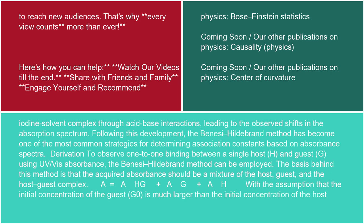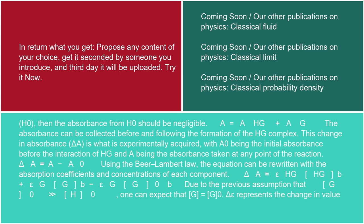To observe one-to-one binding between a single host H and guest G using UV/vis absorbance, the Benesi-Hildebrand method can be employed. The basis behind this method is that the acquired absorbance should be a mixture of the host, guest, and the host-guest complex: A = A_HG + A_G + A_H. With the assumption that the initial concentration of the guest G₀ is much larger than the initial concentration of the host H₀, then the absorbance from H₀ should be negligible.